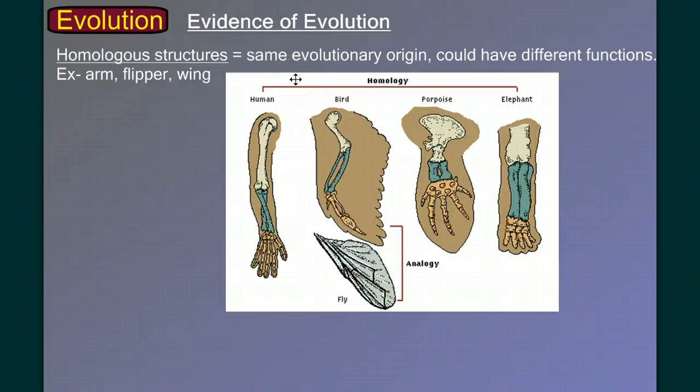We will say in class that we need to be careful of analogous structures—structures that have the same function but not necessarily the same origin, like the wing of a fly and the wing of a bird. They're both for flying, but they didn't have the same evolutionary origin. They originated at different times. Sometimes a structure can be both homologous and analogous, say the wing of a bird and the wing of a bat. But just beware that analogous structures are not evidence of evolutionary relatedness, whereas homologous structures are.